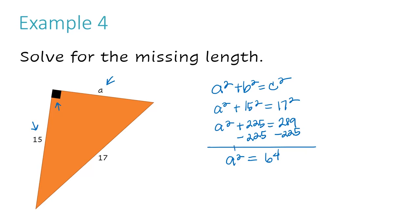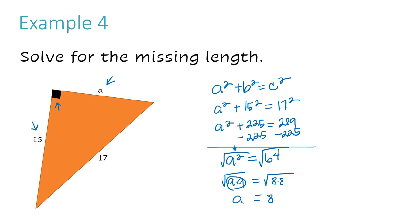Now I have A squared equals 64, because 289 minus 225 gives 64. I need to get rid of the exponent next to A, so I take the square root of both sides. The square root of A squared is like A times A — so A comes out. The square root of 64 is a perfect square: 8 times 8, so 8 comes out and the radical drops away. The answer to the missing length is A equals 8.